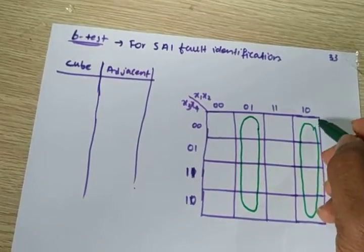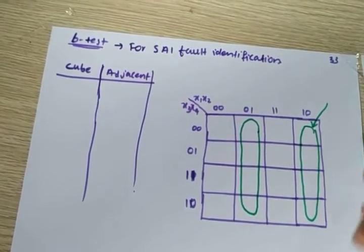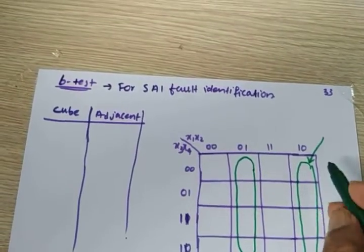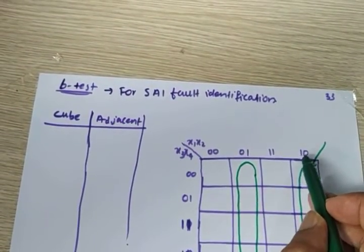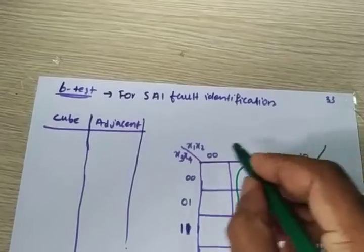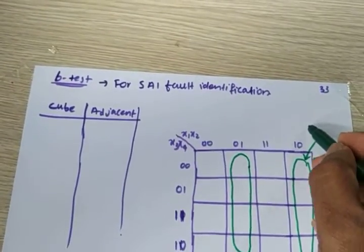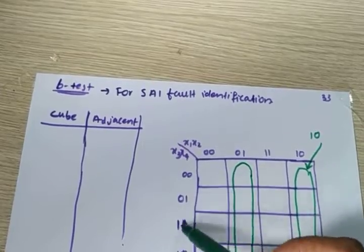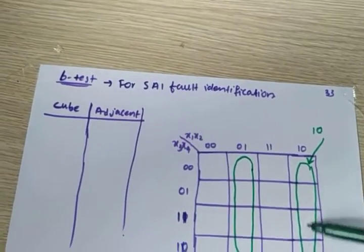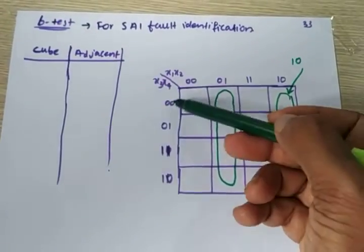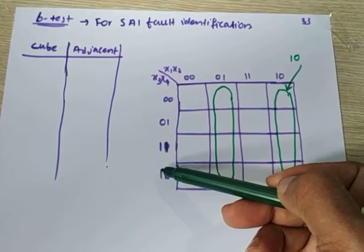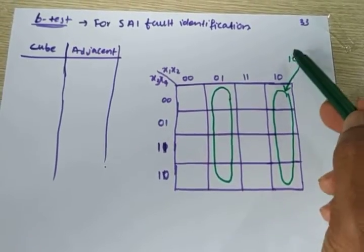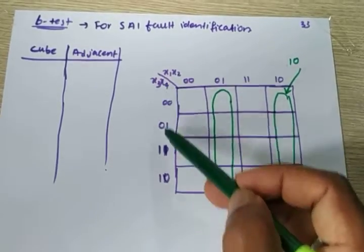What is the cube here? How can you write this cube? See here — x1·x2 is 1·0, so you write it as 1·0. What about x3 and x4? In this cube, x3 and x4 can have any value. But x1·x2 is 1·0, so you write 1·0·2·2.